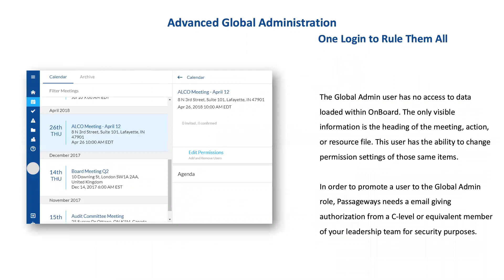The global administrator is where everything starts with the global suite. The global admin is a unique user permission level — that user has the ability to adjust org-level security settings and adjust permissions on most every item within your onboard instance. This can be super useful for groups and organizations that have multiple administrators or creator roles within their onboard organization.